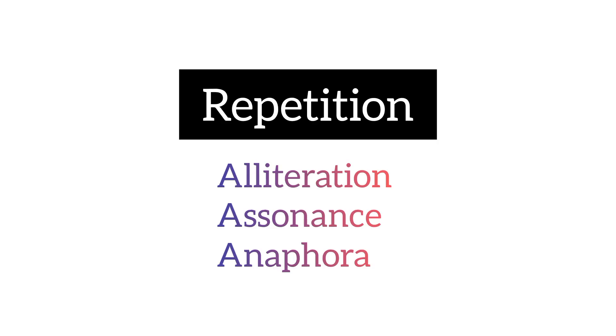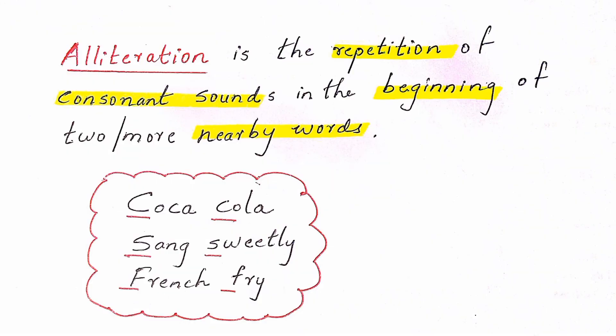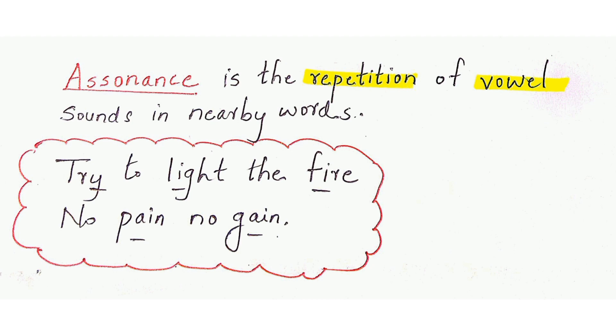The next category is repetition, which includes alliteration, assonance, and anaphora. Alliteration is the repetition of consonant sounds at the beginning of two or more nearby words. Consonant sounds are repeated and they should be at the beginning of the words. Examples: 'Coca-Cola,' 'sang sweetly,' 'French fry.'